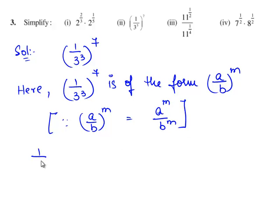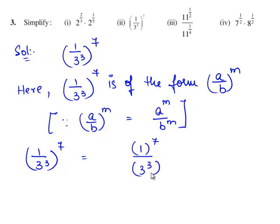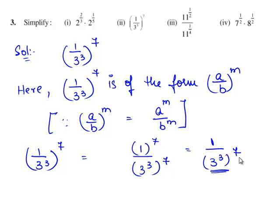We write 1 by 3 raised to the power of 3 whole power 7 as 1 whole power 7 by 3 raised to the power of 3 whole power 7. Here 1 power 7 is 1, and in the denominator we have a power raised to a power.